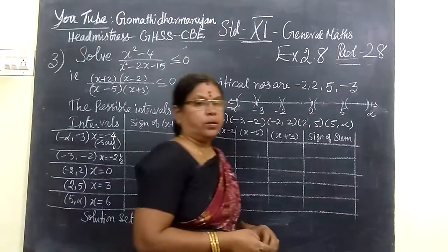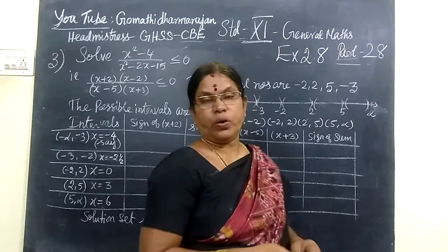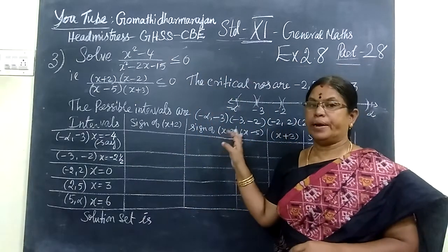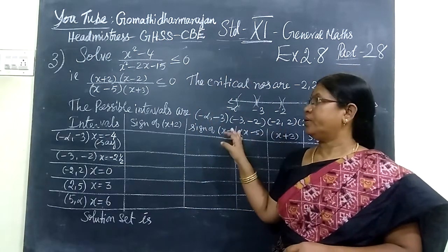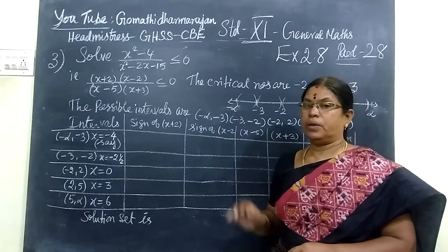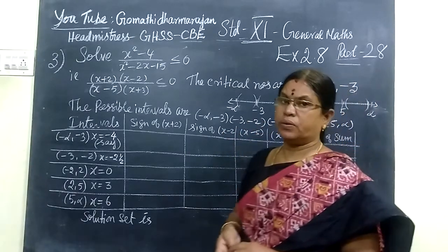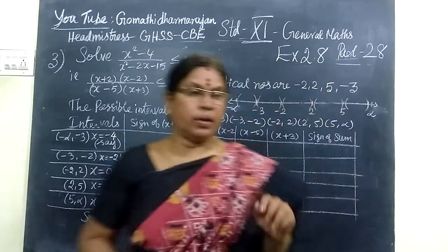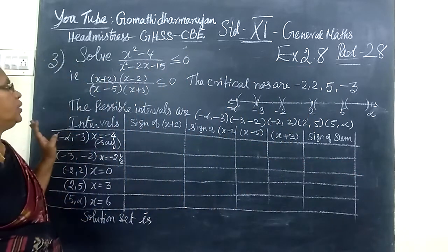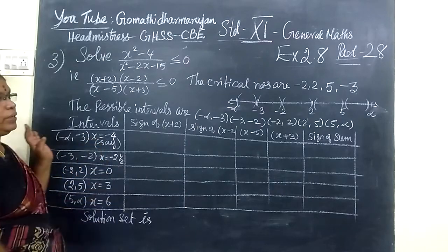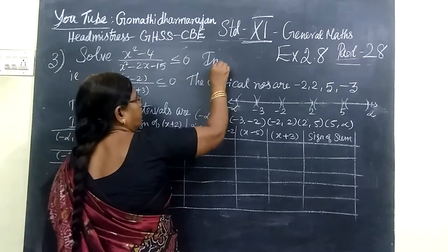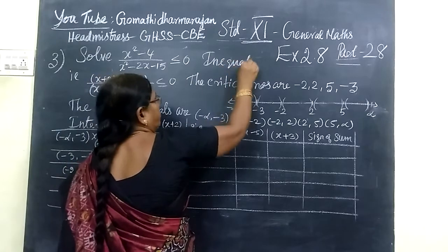Good evening to all. Now we want to take part 28, and this is Gentleman's for Love Standard, third question. In the last class we have seen the first and second question. This is the third question — a very simple sum. You are given an inequality. Here we are seeing this chapter on inequality.